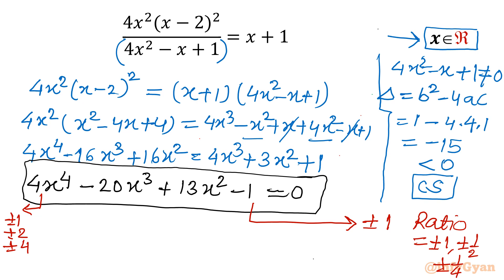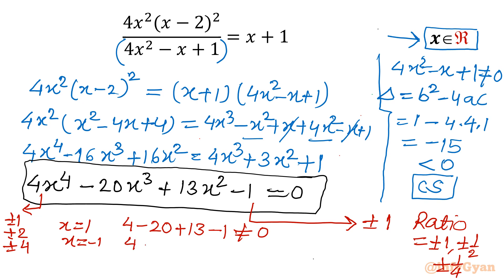Out of these six values, let me try x equals 1: 4 minus 20 plus 13 minus 1 gives 17 minus 21, which is non-zero. Let me try x equals minus 1: 4 plus 20 plus 13, which is also not zero. So neither x equals 1 nor x equals minus 1 is a solution.